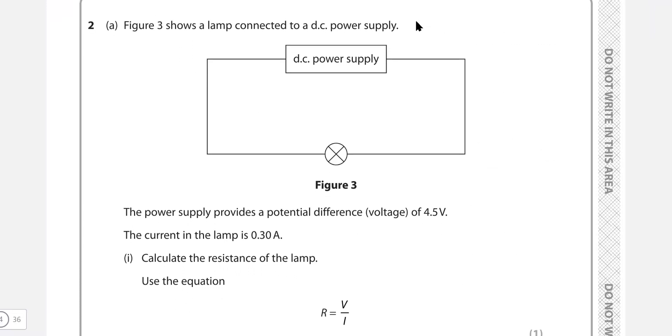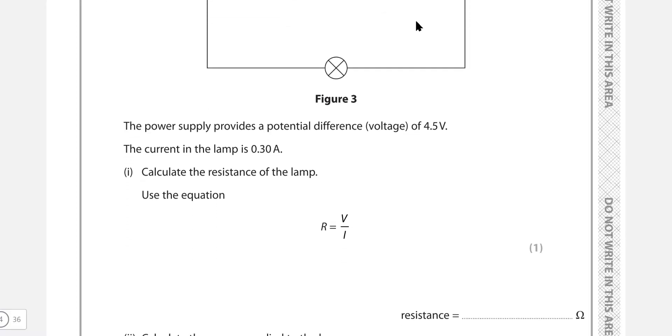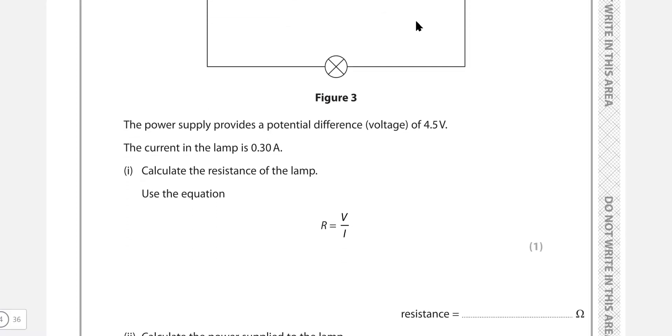Next question. The figure shows a lamp connected to a DC power supply. The power supply provides a potential difference of 4.5 volts, and the current in the lamp is 0.3 amps. Use the equation to figure out the resistance, and they've even given us the equation. R is V over I, so this means that this will be 4.5, which is the voltage, divided by the current, which is given to be 0.3. So all we need to do is put those into a calculator, 4.5 divided by 0.3, which is going to give me 15 ohms.